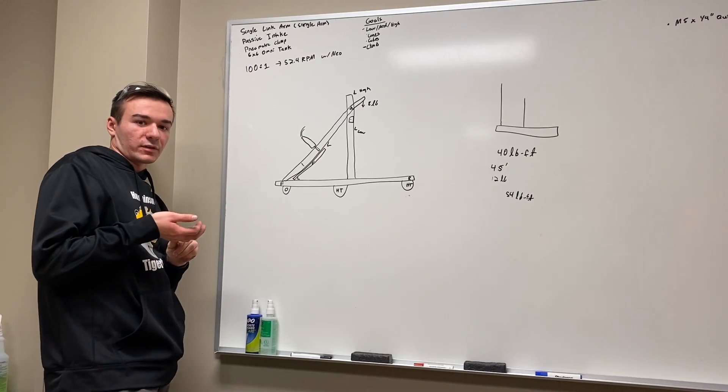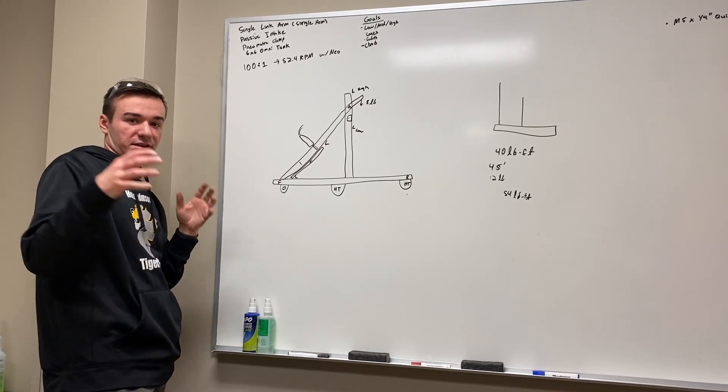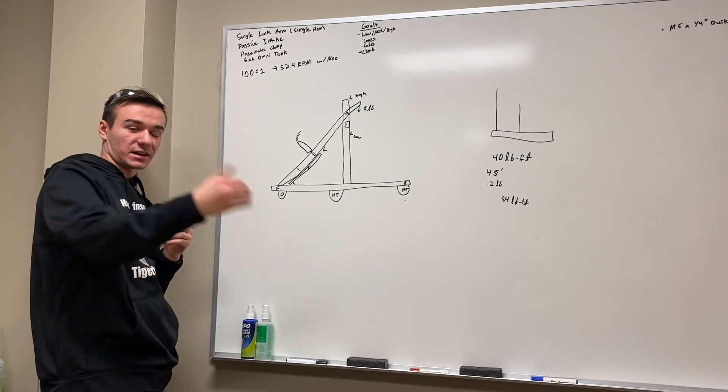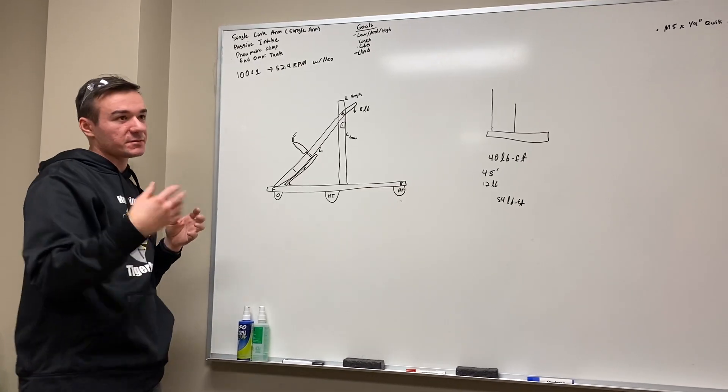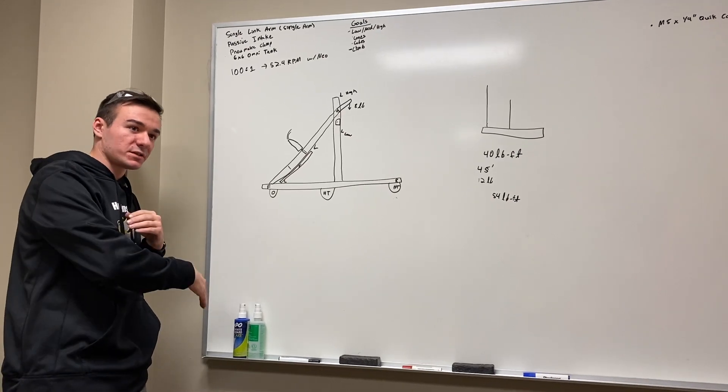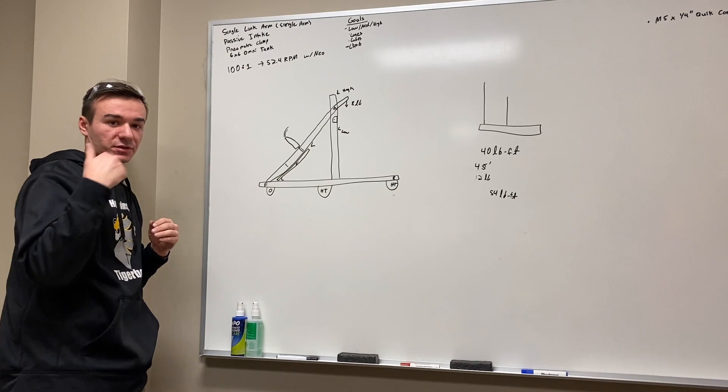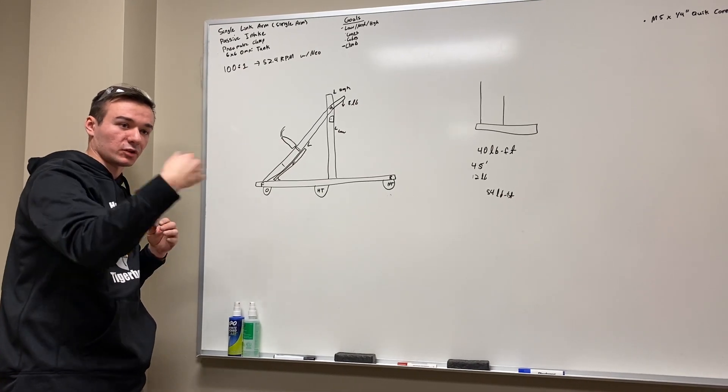To make up for the limitations of the height and the size of the robot this year, we are going to be using an extendable arm. Teams might also be doing an extendable arm that's mounted on the front. In our case with our single link arm, we actually have to mount ours towards the rear of the bot to make our arm long enough.